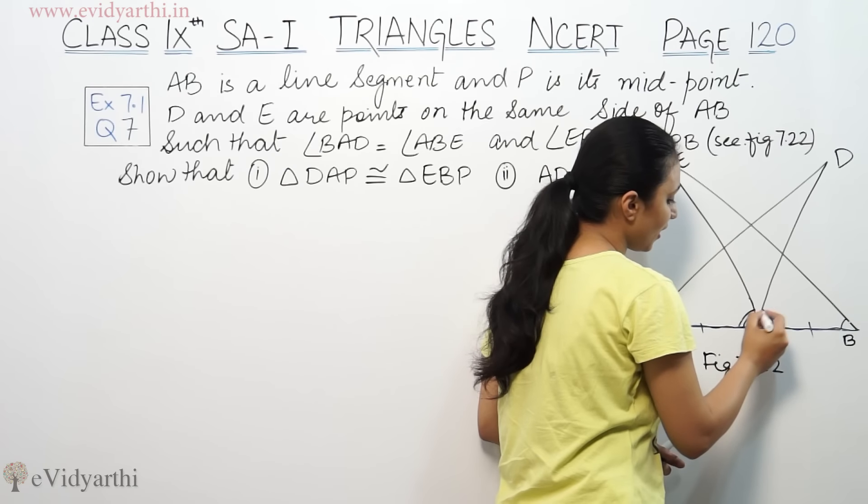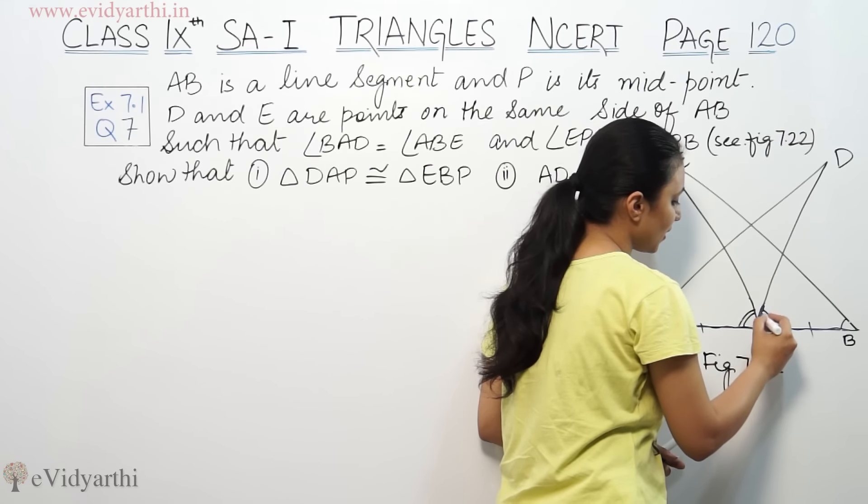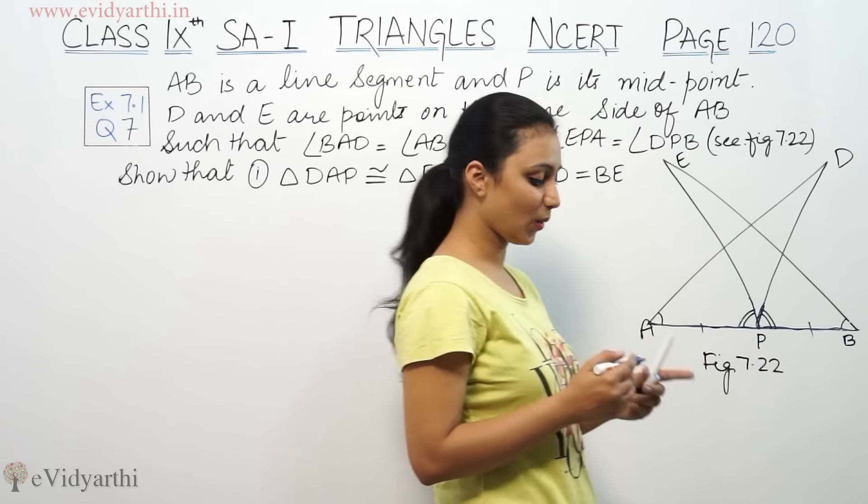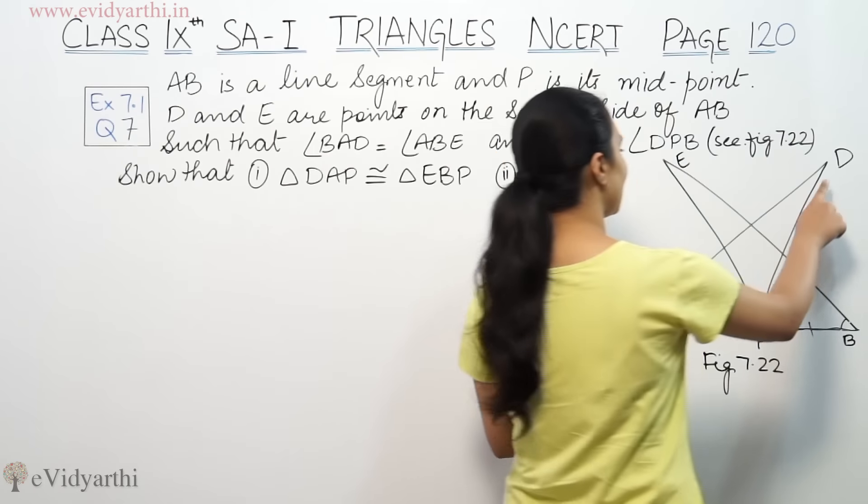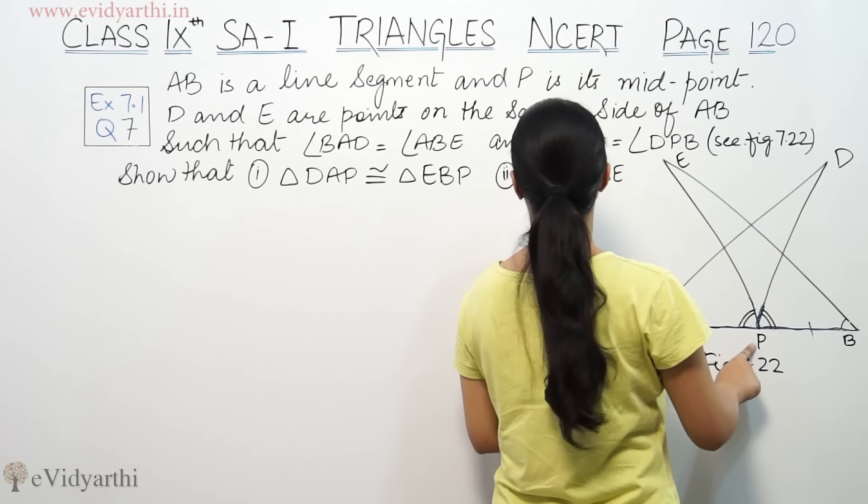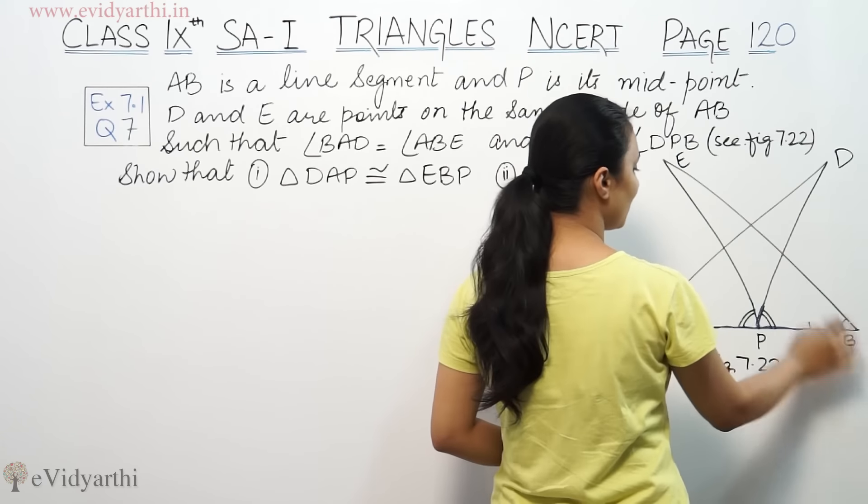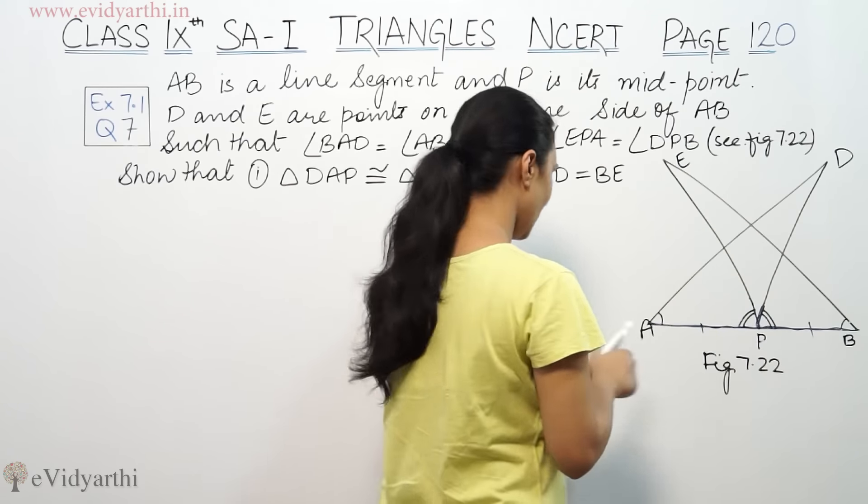So we have angles here and here which are equal. Now we need to prove that triangle DAP is congruent to triangle EBP.